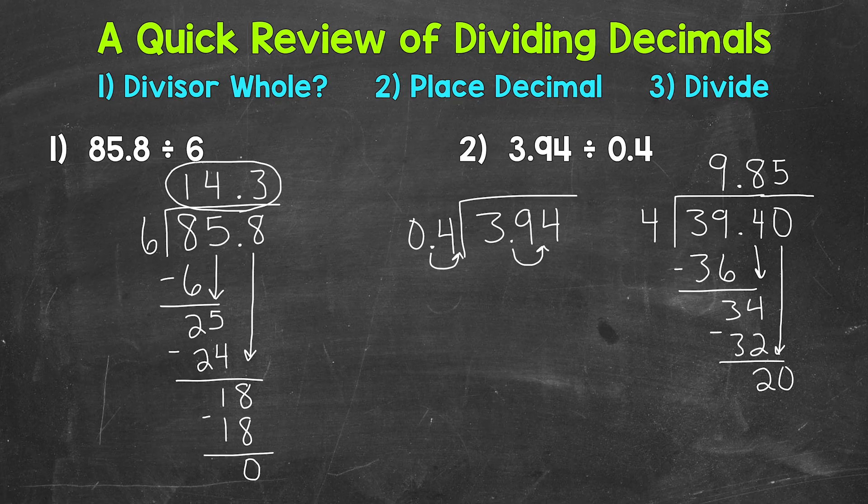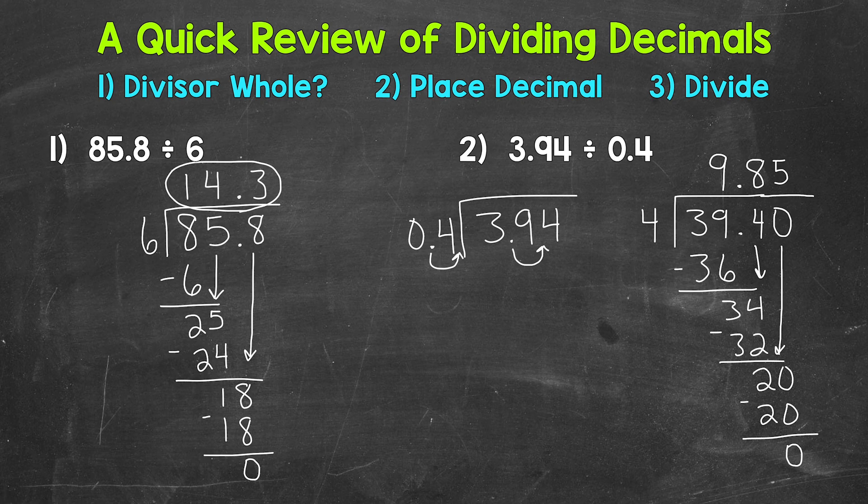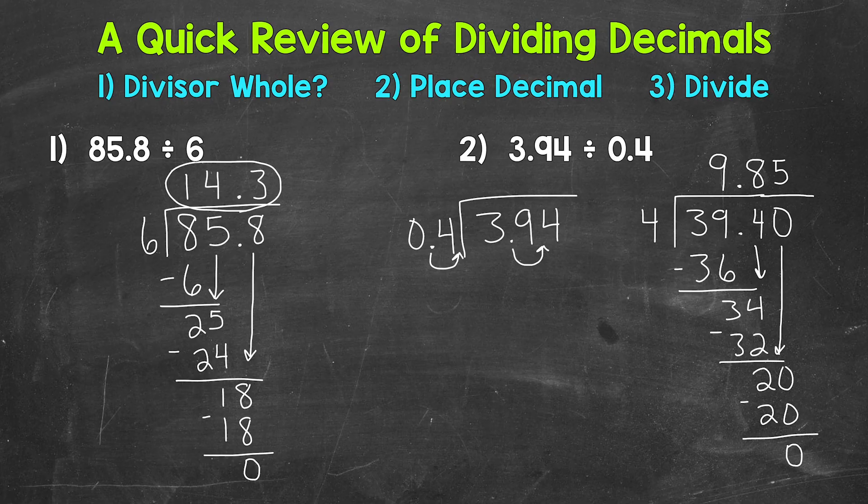Now we multiply. 5 times 4 is 20. And now we have that clean cut 0. We went all the way over. We needed to use a placeholder 0 in order to continue our process, which is perfectly fine. And then we worked to get that clean cut 0 and our final answer in decimal form, and that is going to be 9.85.